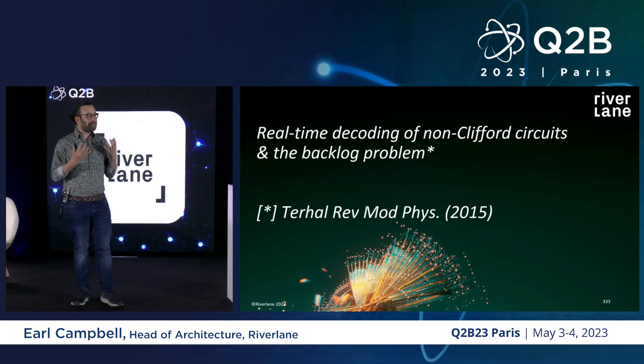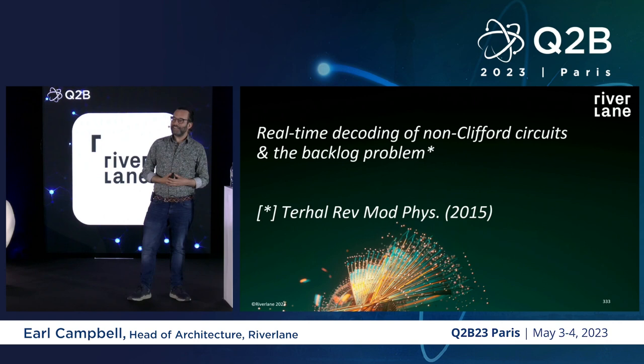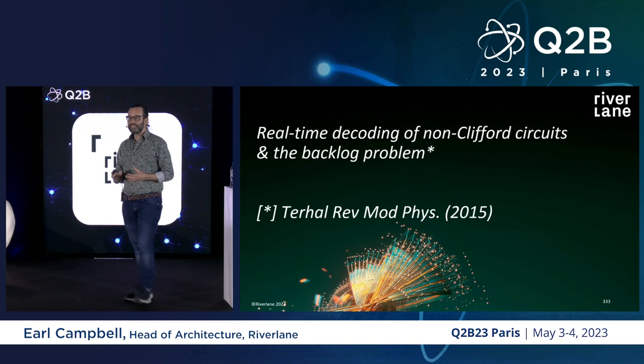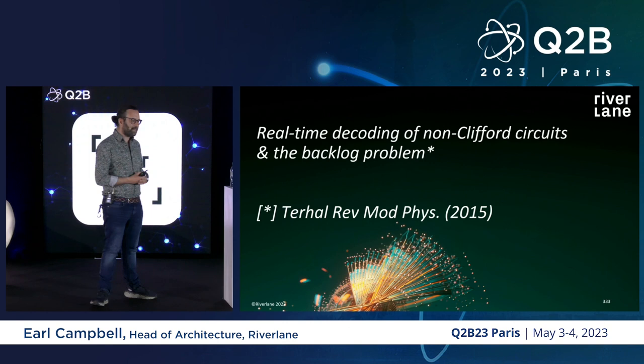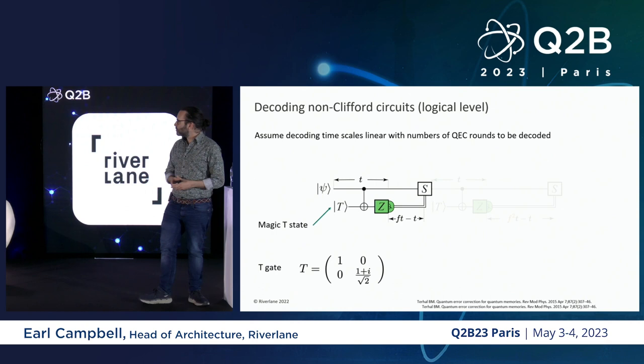If you don't need to physically perform error correction, why do we need fast decoders? The key thing is that Clifford circuits aren't universal — they're efficiently classically simulatable. At some point you have to go beyond Clifford circuits, and as soon as you start implementing non-Clifford circuits you encounter a possible problem that Barbara Terhal named in a review paper, which we now call the backlog problem.